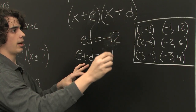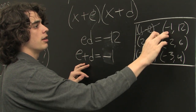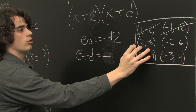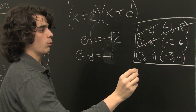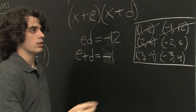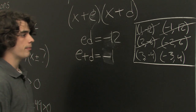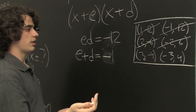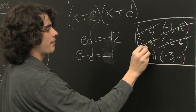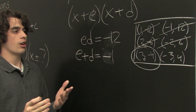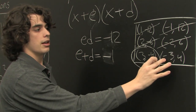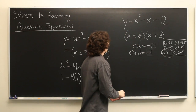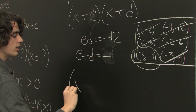Since we have such a short list to work with, we can simply plug a few of them in and see which one gives us the right answer. 1 plus negative 12 — that's not it. Negative 1 plus 12 is 11 — also not it. 2 minus 6 is negative 4 — not what we want. Negative 2 plus 6 is positive 4 — not what we want. 3 minus 4 is negative 1 — ta-da, we found it! Just to double check: negative 3 plus 4 is positive 1, which is not what we want.